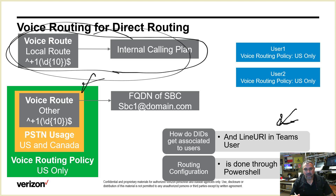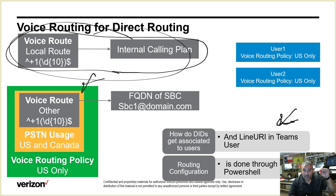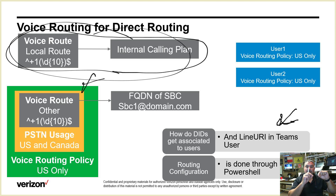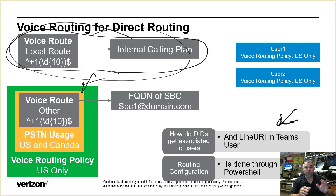You need to add the number to the Active Directory attribute — because when people look you up via LDAP through a CRM or other system, the number has to be there. And you also need to add it to the user itself via remote PowerShell. With Direct Routing, there's no clicking and dragging in the Microsoft Teams portal — it's all manual remote PowerShell.